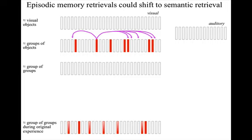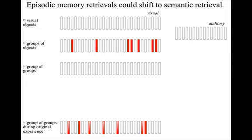These more complex receptive fields can drive activation of other columns on the basis of past simultaneous receptive field expansion. That leads to an active column population that tends to include columns active during one specific past receptive field expansion episode.